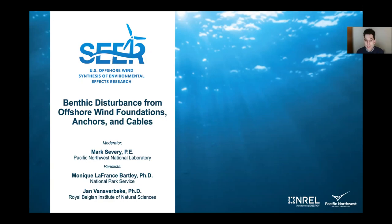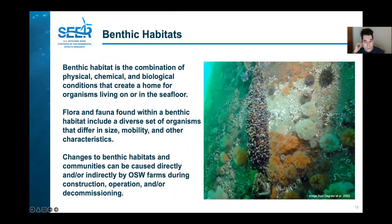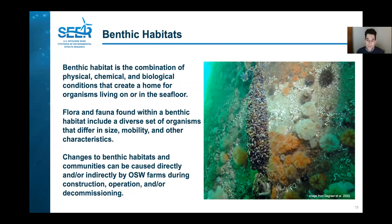Just to begin with an overview, the benthic habitat is a combination of the physical, chemical, and biological conditions that provide food and shelter to organisms living on or in the seafloor. Benthic organisms include flora and fauna with a diverse set of characteristics, including their size and mobility — for example, anemones, sponges, crabs, mussels, corals, sea stars, snails, worms, and many more. Groundfish are also considered part of the benthic community, but this discussion will really focus on the benthic habitat and the invertebrates that live there, rather than fish, which we just discussed earlier today.